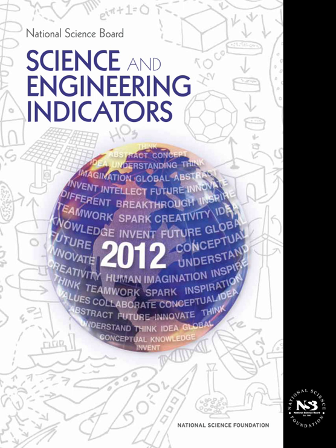The National Science Board of the United States establishes the policies of the National Science Foundation within the framework of applicable national policies set forth by the President and the Congress. The NSB also serves as an independent policy advisory body to the President and Congress on science and engineering research and education issues. The Board has a statutory obligation to render to the President and to the Congress reports on specific, individual policy matters related to science and engineering and education in science and engineering, as Congress or the President determines the need for such reports.